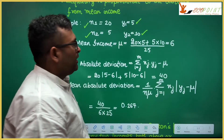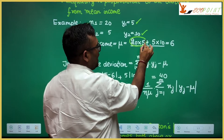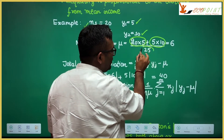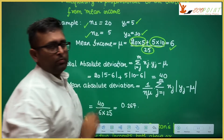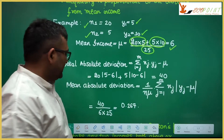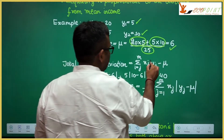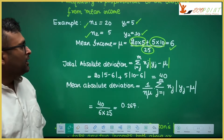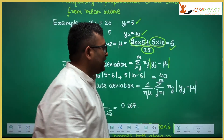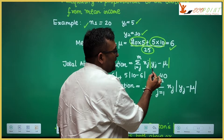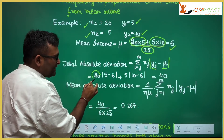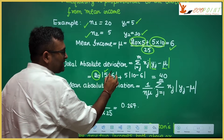What is the mean income? Total income of the first class plus total income of the second class, divided by the total number of individuals — this gives you the mean income, which we call mu. For this example, the mean income works out to 6.